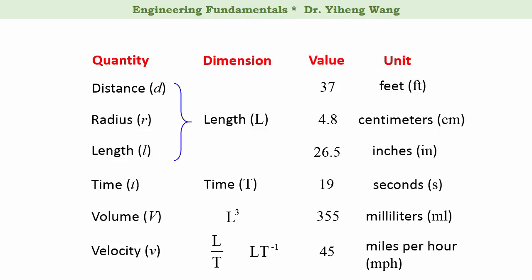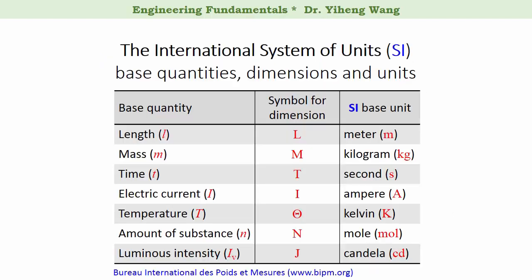According to the International System of Units, or the SI unit system, there are only seven base quantities, and therefore seven base dimensions. We already mentioned two of them — length and time — and the dimensions for all other quantities can be derived from these seven base dimensions. Listed here in this table are the seven base quantities and their associated base dimensions, as well as the base units according to the SI unit system. Please pay special attention to the different symbols given in this table, written in red.